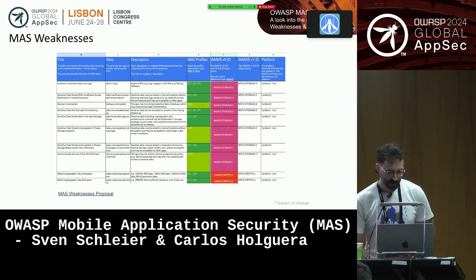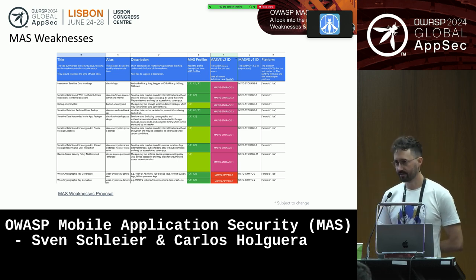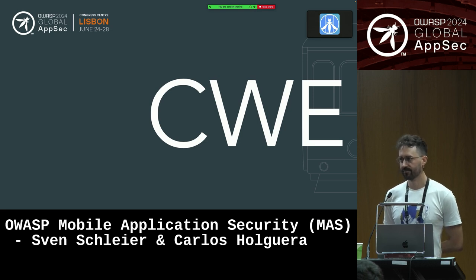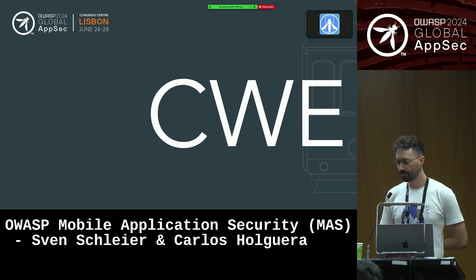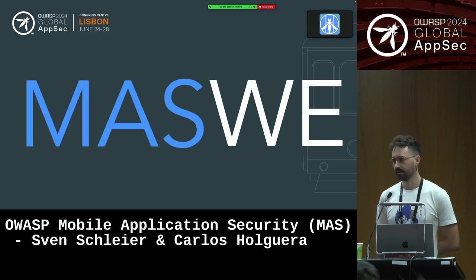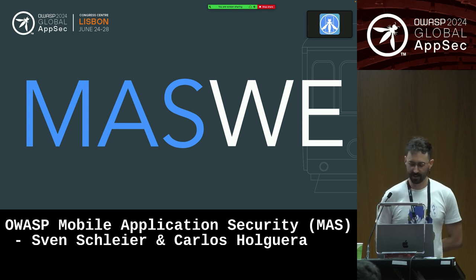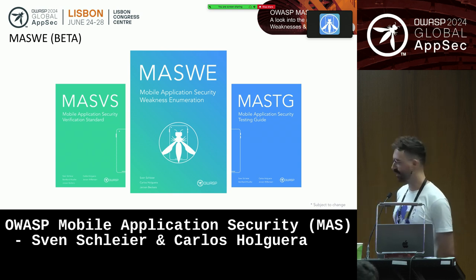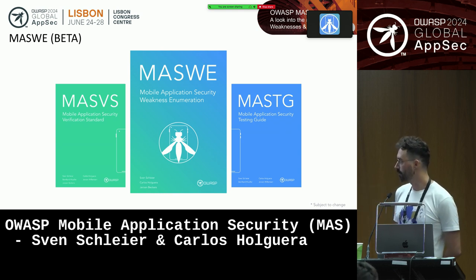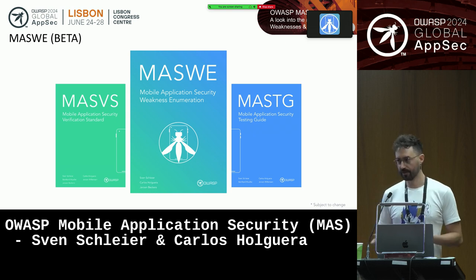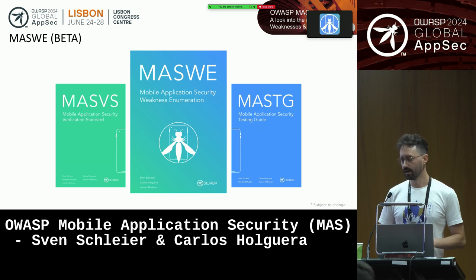Over to Carlos. So here comes the completely new thing: weaknesses. That's a word probably familiar to you — CWEs are very much used in the industry to reference weaknesses in software. What if we do something like this? We will now have all the weaknesses related to mobile security and we call this MASWE. So now we have the MASVS, the MASTG on the other side, and now the MASWE connecting everything together. The new weaknesses are pretty similar to the CWEs — that's very intentional, as you will see in the structure.